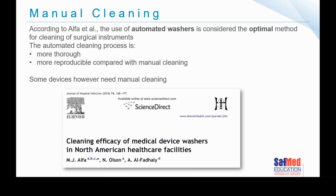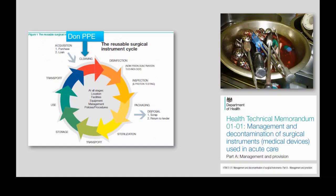As I was saying, in this paper that Alpha published in 2010, the focus was on understanding why automated washer disinfectors are so important, although some devices do need to be cleaned manually. To make an instrument safe to use on a patient, that device needs to go through a whole series of steps: cleaning, disinfection, inspection, packaging, sterilization, safe transport, use, and safe transport again of a contaminated device. The entire process begins at the very beginning — around cleaning.